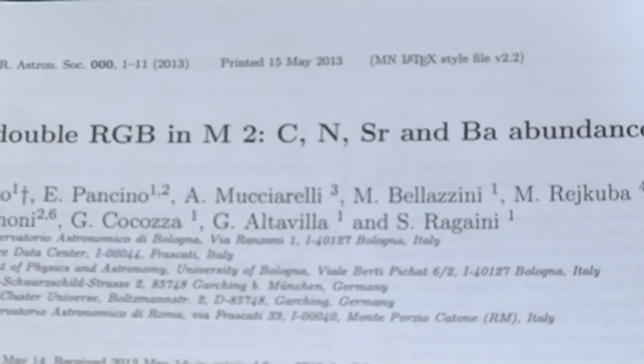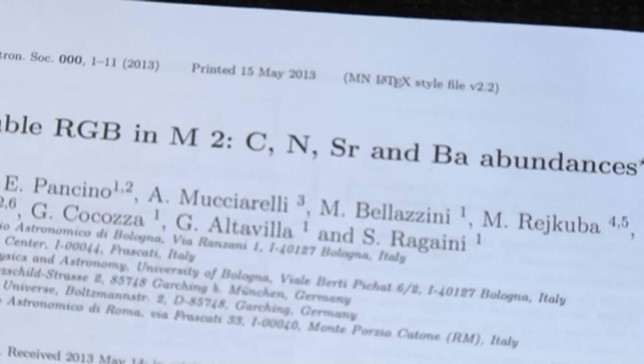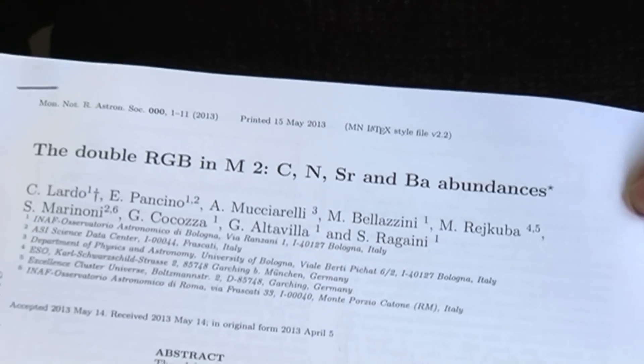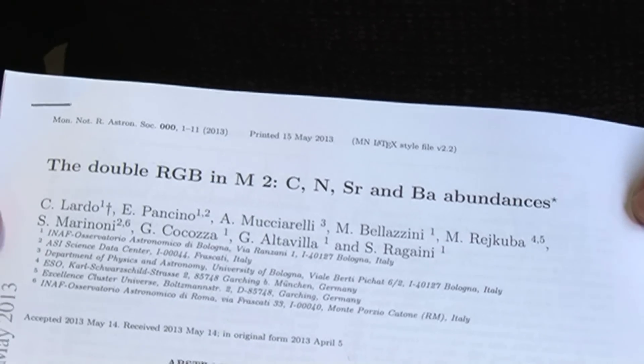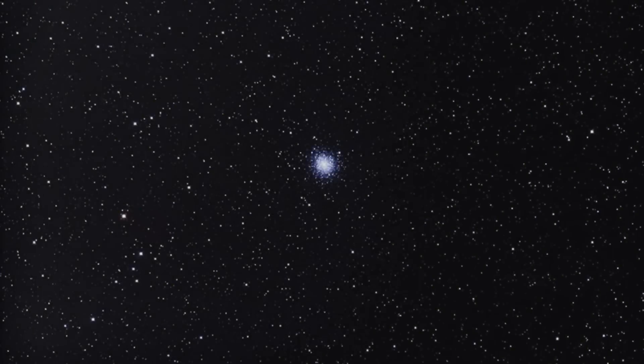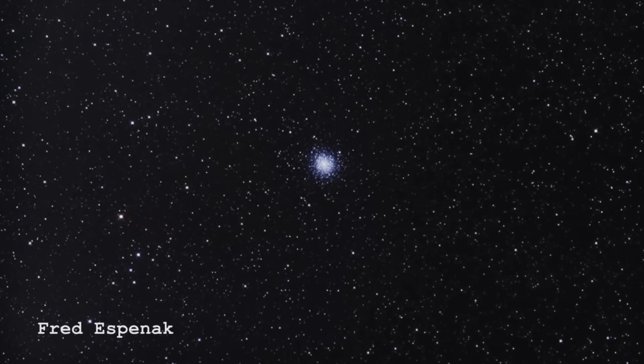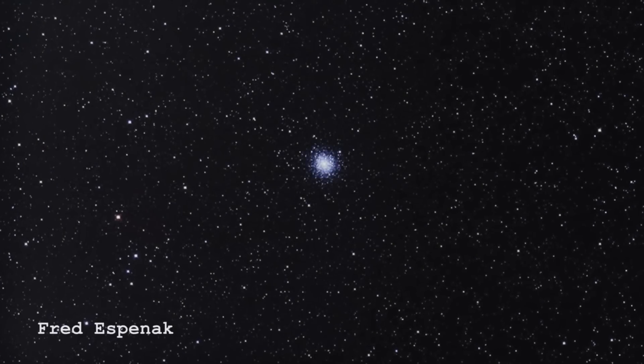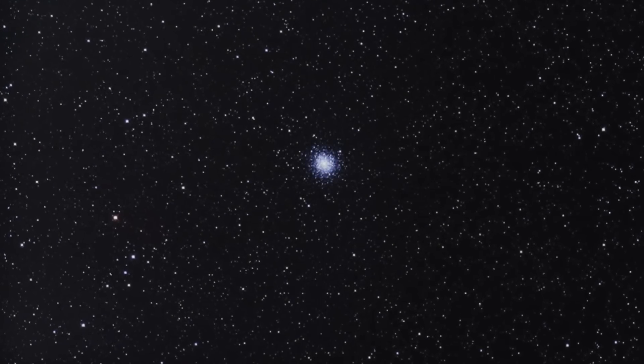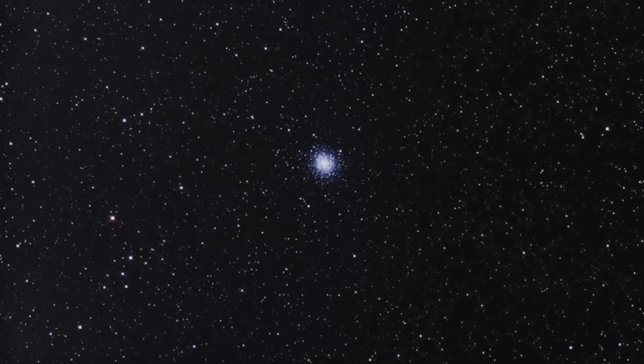I'm going to give that a go - you ready? Carbon, nitrogen, strontium, and barium. You've done enough of these periodic table videos now, you know those, right? They've been looking at some of the stars in this cluster and measuring the abundances of these various chemical elements.